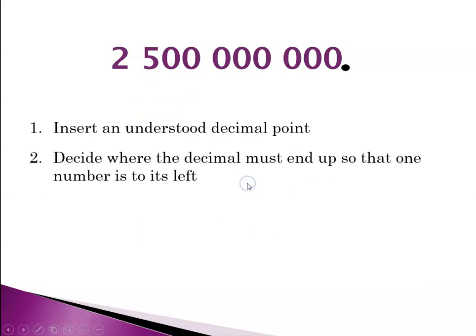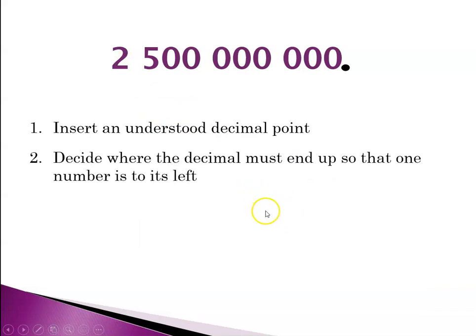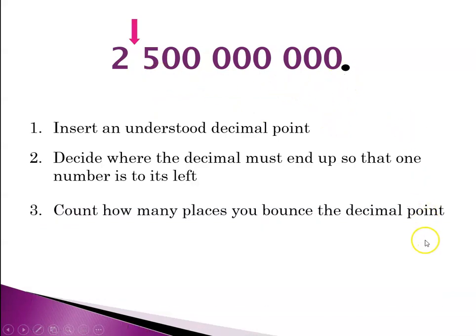So now let's look at a number that is given to you here in so-called standard notation, and let's talk about getting it into scientific notation. So for starters, you're going to insert, in this case, the understood decimal point, since there is no decimal point. So there it is. Then you have to ask yourself where should the decimal end up so that there's only one digit to its left. And so that's going to be between the two and the five. So now we just need to figure out how many places we need to bounce the decimal point to get it where we need it to be.